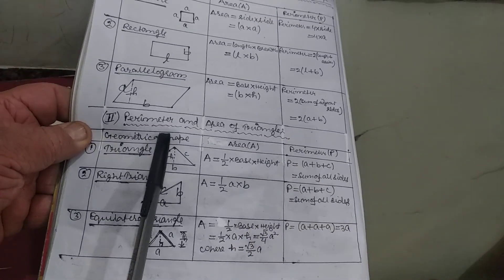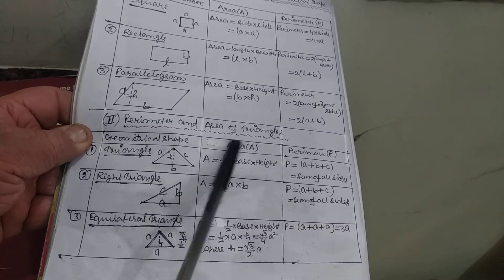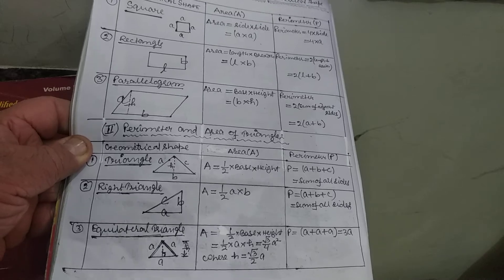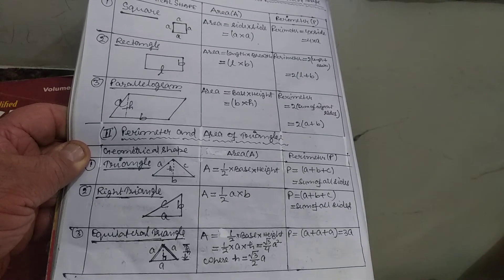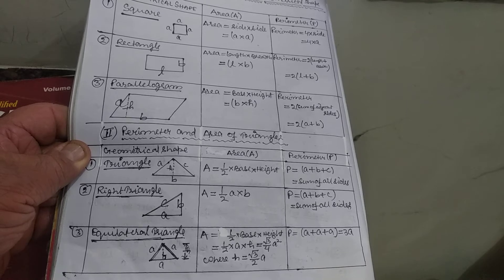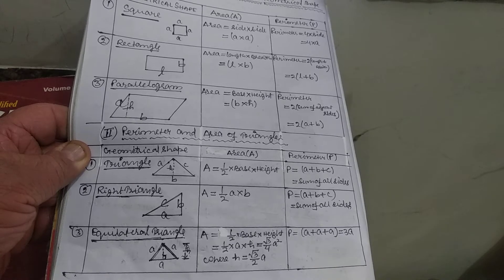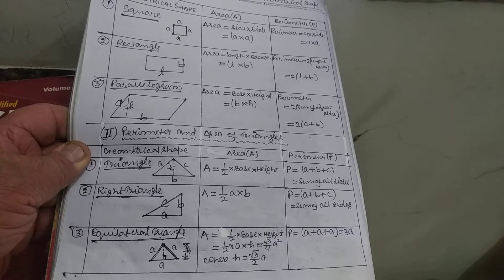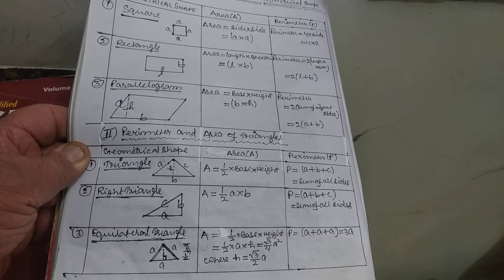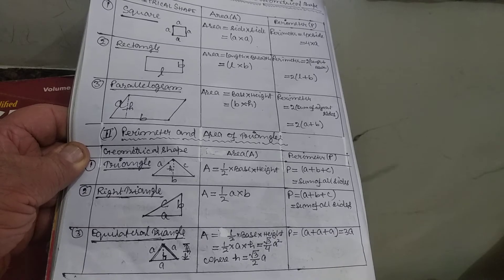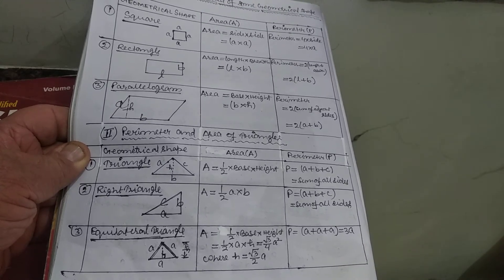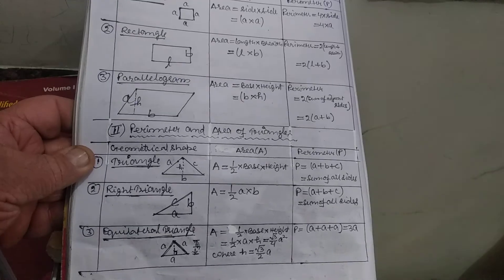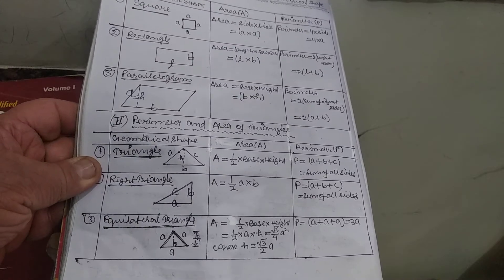These are some formulas you will have to learn: area and perimeter of a square, area and perimeter of a rectangle, and area and perimeter of a parallelogram. The second case covers perimeter and area of triangles.